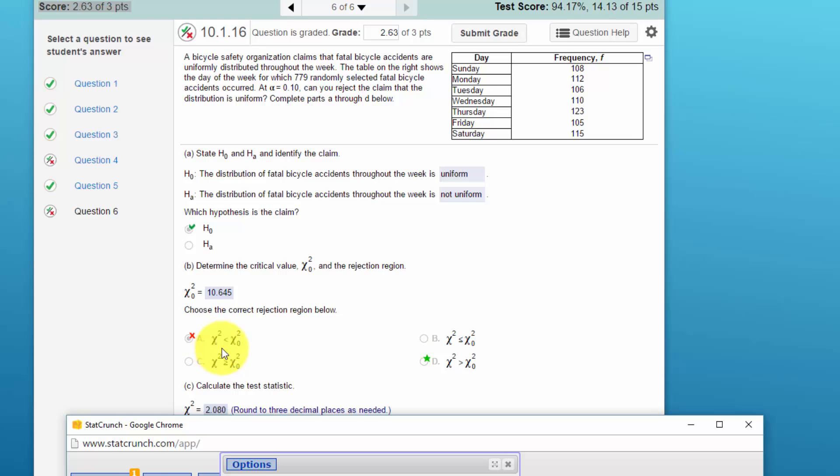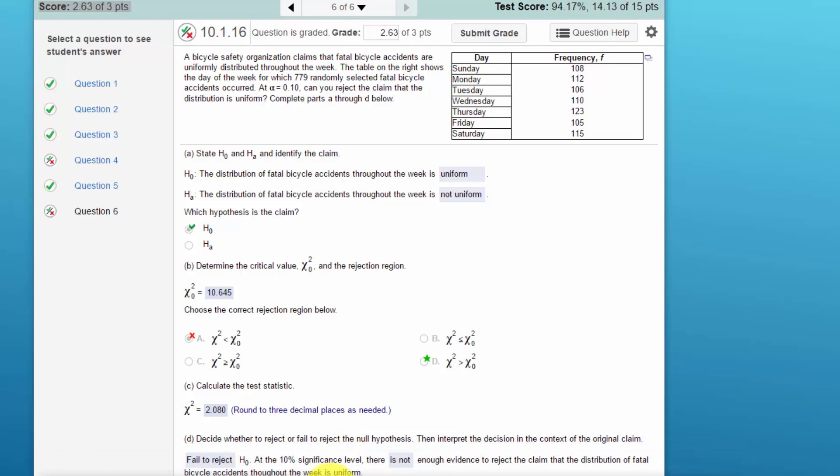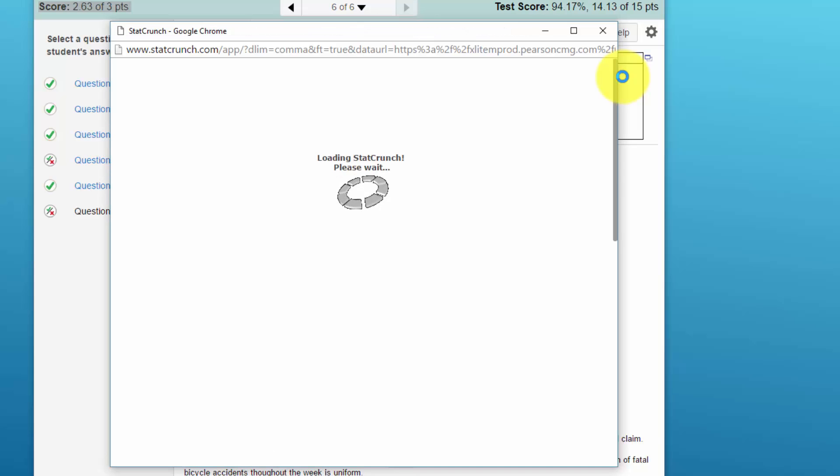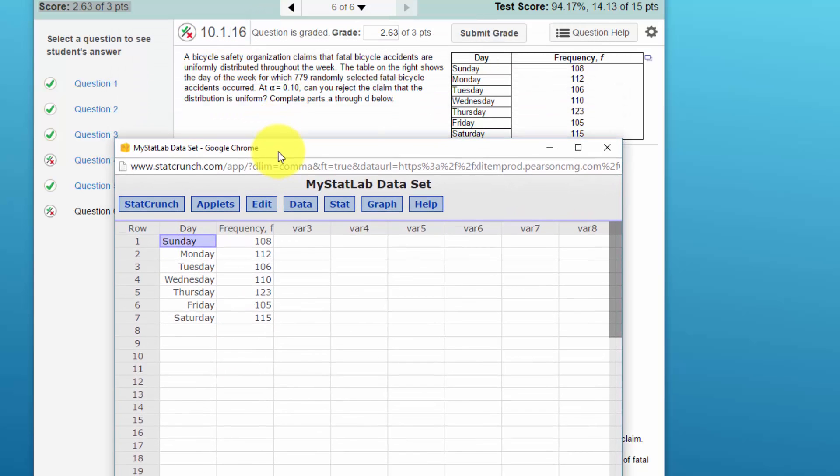So the next thing to do is to calculate our test statistic. I'm going to do that using, I want to reload the data in StatCrunch, so I'm going to click on our little icon, open in StatCrunch. We have our data here and for goodness of fit we need to have our expected, and all we're given is, I'm going to just put it in this column here, seven seven nine occurrences, and we need to come up with what we expect them to be.